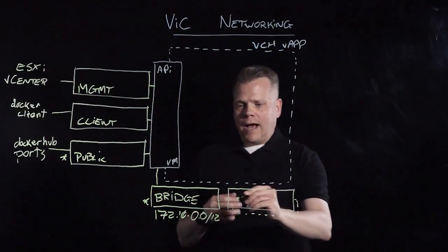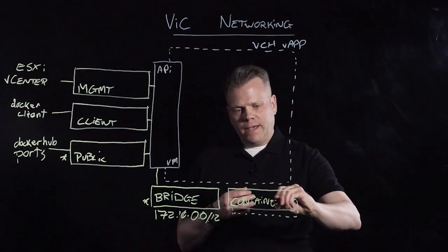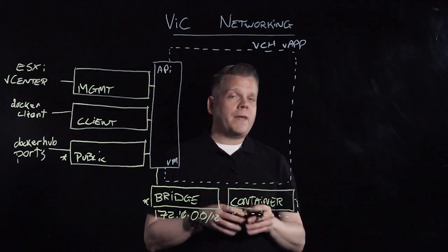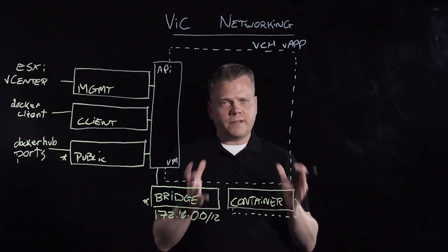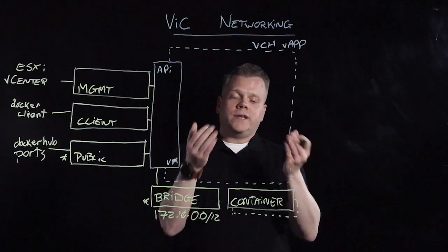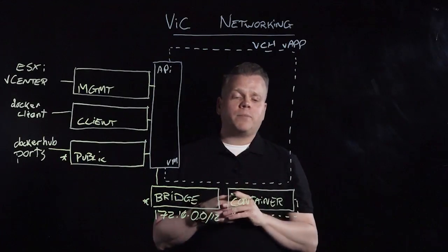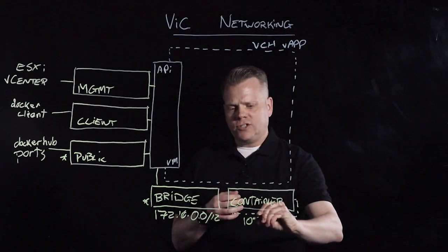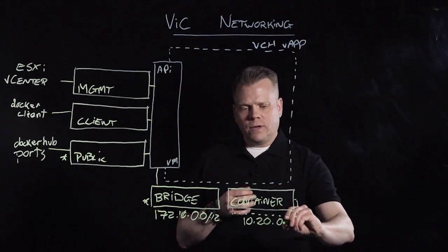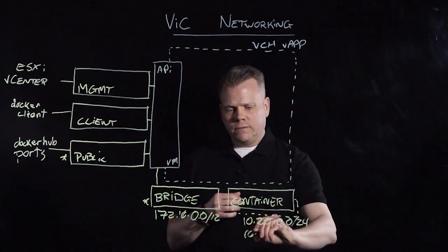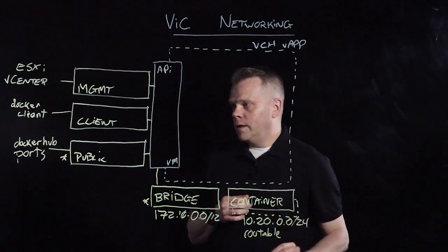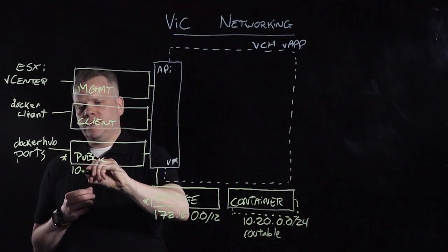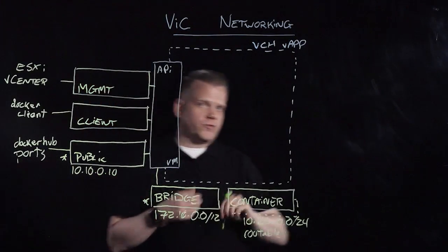Lastly, we're going to talk about the container network. This container network is a user-defined network that you can use to connect your container VMs directly to a routable network. This is something that's not possible in the regular Docker world — it's unique to VIC. Because we're provisioning these Docker images as VMs, you can connect these VMs directly to a port group. These container networks can use DHCP or static. Here we'll assume DHCP with the scope 10.20.0.0/24 and the network is called "routable." For the public network in our examples, we'll use the IP address 10.10.0.10.